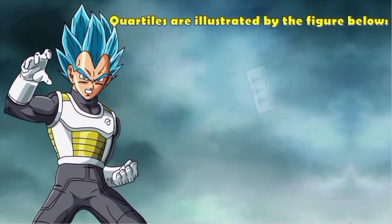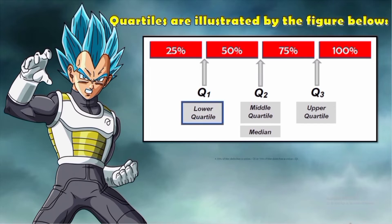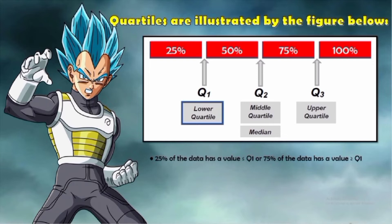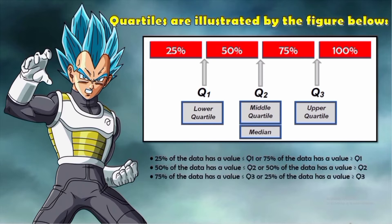Quartiles are illustrated by the figure below. We have 25%, 50%, 75%, and 100%. For the lower quartile: 25% of the data has a value less than or equal to Q1, or 75% has a value greater than or equal to Q1. For the middle quartile: 50% of the data is less than or equal to Q2, or 50% is greater than or equal to Q2. For the upper quartile: 75% is less than or equal to Q3, or 25% is greater than or equal to Q3.